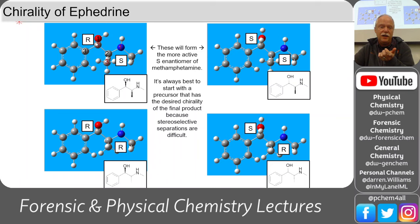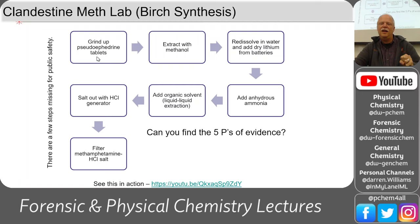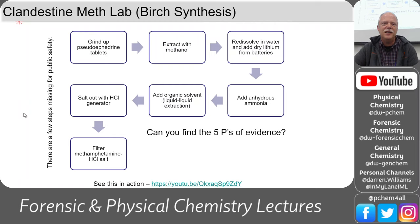Now let's look at how we turn ephedrine into methamphetamine. If we remove the OH group, we end up with methamphetamine. This is a sketch of the Birch synthesis — there are several synthesis paths for methamphetamine, and a few steps are missing here for public safety.